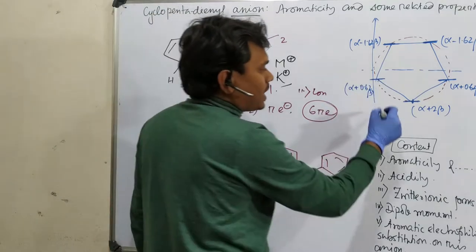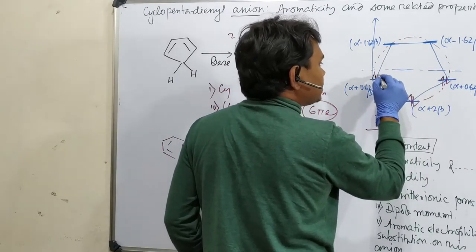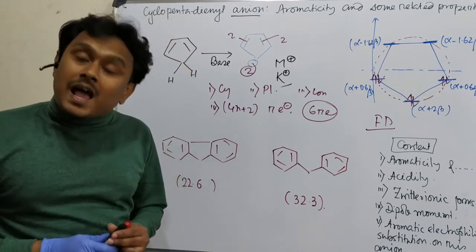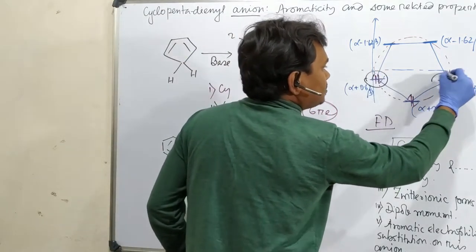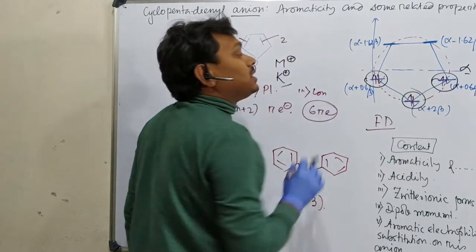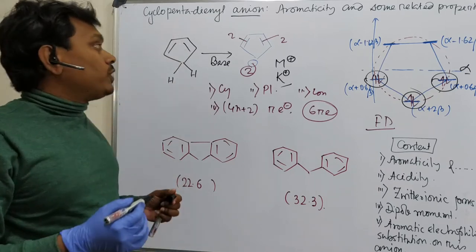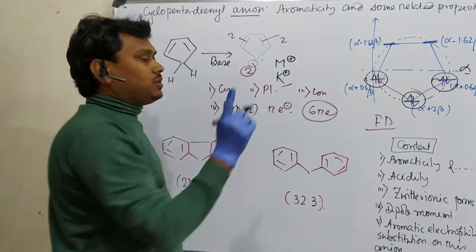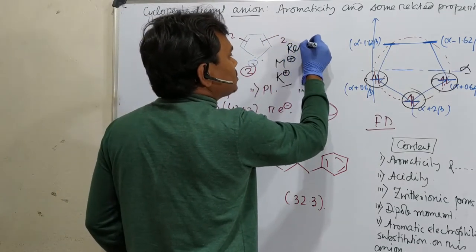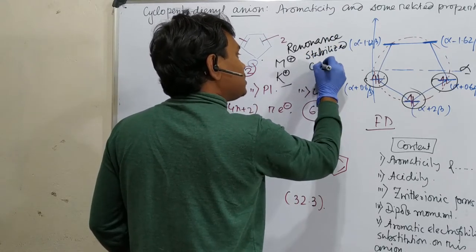If we draw the MO energy diagram, we fill two electrons here, two here, and two here — six electrons total, all in bonding orbitals. The non-bonding orbital level, alpha, is above the filled orbitals. So the cyclopentadienyl anion is stable because all electrons are in bonding orbitals. That is why it preferentially forms despite having a negative charge. Better to say, this is a resonance-stabilized carbanion.